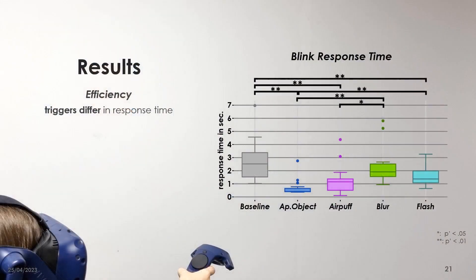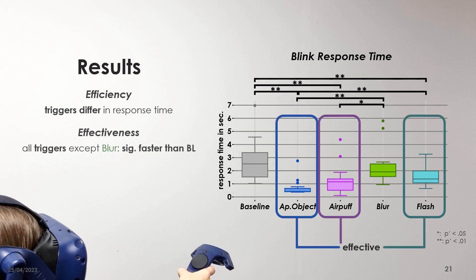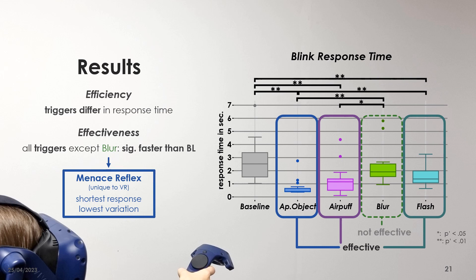Looking at the results of our study, we found the blink response time to differ significantly among the methods and conclude that the approaching object, AirPuff, and Flash triggers are generally effective in triggering blinks on demand. The blur trigger, in contrast, did not yield quicker blink responses than our baseline condition, in which no trigger was activated. Overall, the approaching object trigger, which is unique to virtual reality, showed the shortest response times and only small variation across participants, rendering the menace reflex effective and efficient, and hence highly interesting for virtual reality.